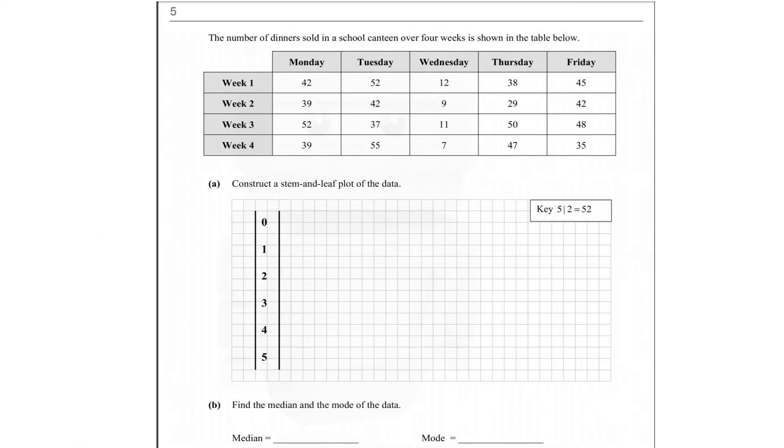Let's move on. Here we're asked to construct a stem and leaf from the data in this table here. And it's the number of dinners sold in a canteen over four weeks. So you can see here on week 1, 42 dinners were sold on Monday, 52 on Tuesday, and so on. So it's a matter of carefully pulling out each piece of data and presenting it in the stem and leaf.